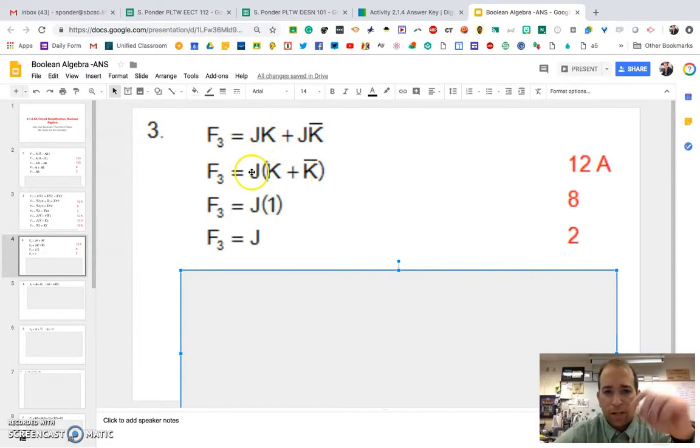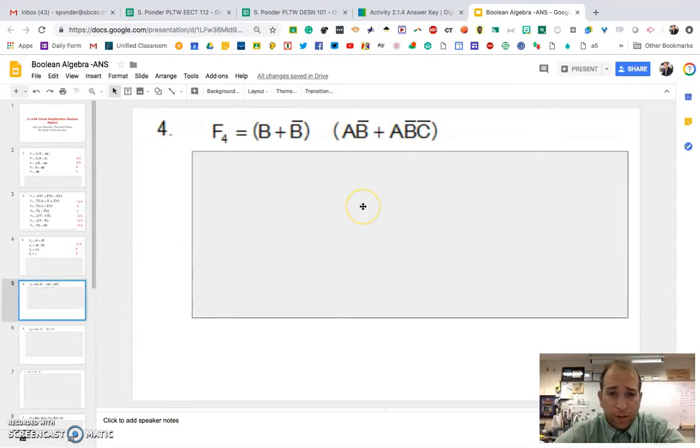So you take out the J, distribute that out and you'll end up with K plus not K. If you look at number eight, that says that equals one. And then finally you're just left with J. So that would be a simple just wire going right to J if you were going to breadboard this.